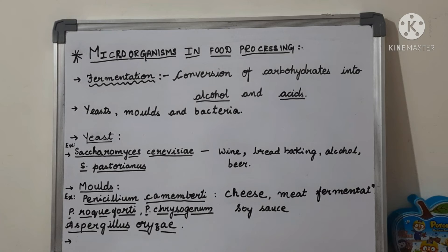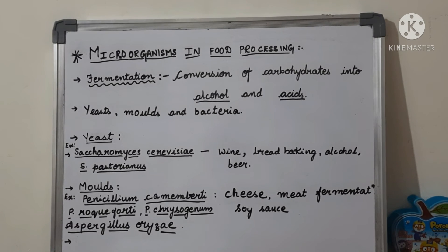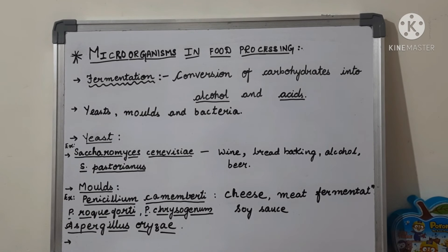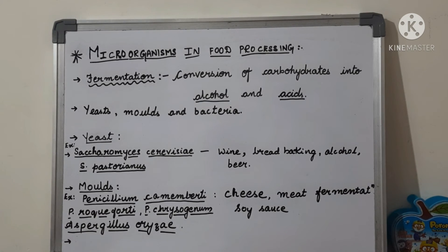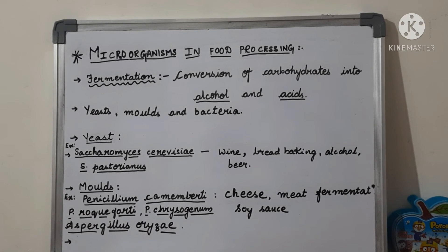Next are moulds, which belong to fungi. Examples of moulds used in food processing are Penicillium camemberti, Penicillium roqueforti, Penicillium chrysogenum, and Aspergillus oryzae. These varieties of moulds have been used in the production of cheese, meat fermentation, and soy sauce.